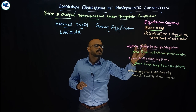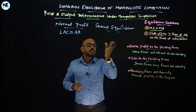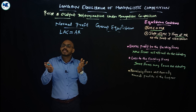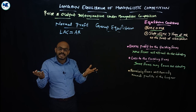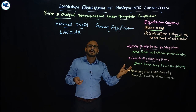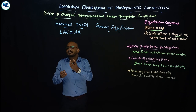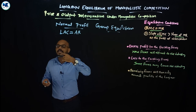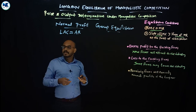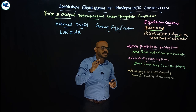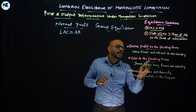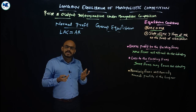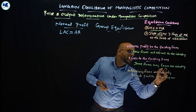When excess profit exists in the existing firms in an industry, new firms will be attracted to the industry. Because of free entry - there is no government restriction on free entry - when new firms enter the market, the demand curve will shift and the profit falls. Abnormal profit will be wiped out and only normal profit will remain.